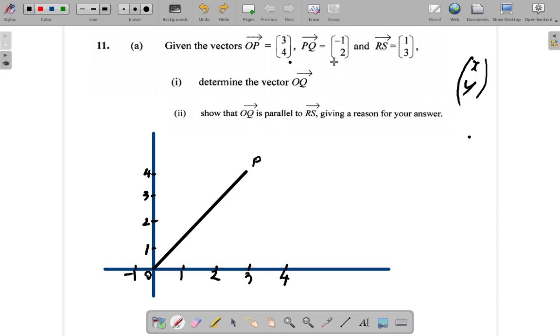Now, PQ is (-1, 2). What this means now - PQ is not a position vector. It's a free vector. That means it doesn't start at the origin. Now, PQ. You want to find where Q is. From P, you must go one place to the left and two places up. So let me just estimate. I don't have graph paper. But imagine if you have PQ.